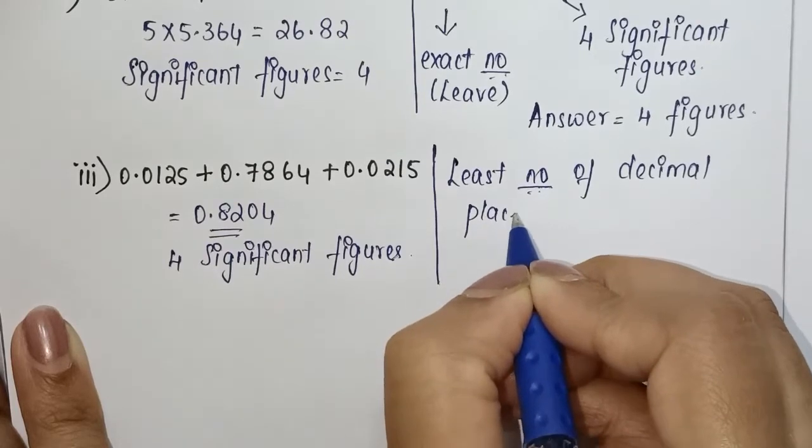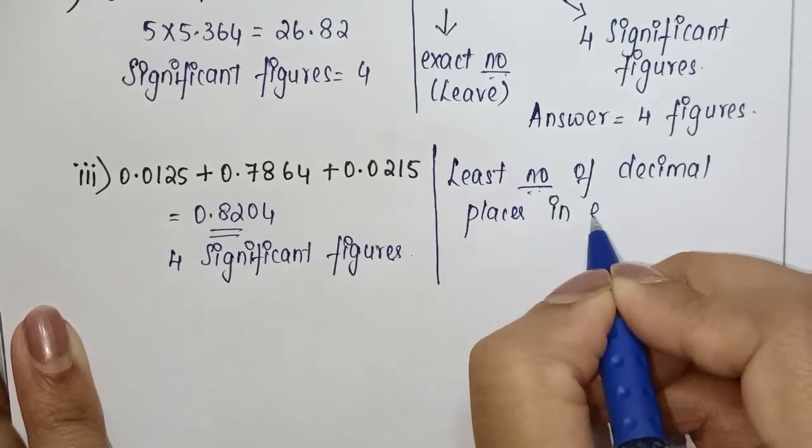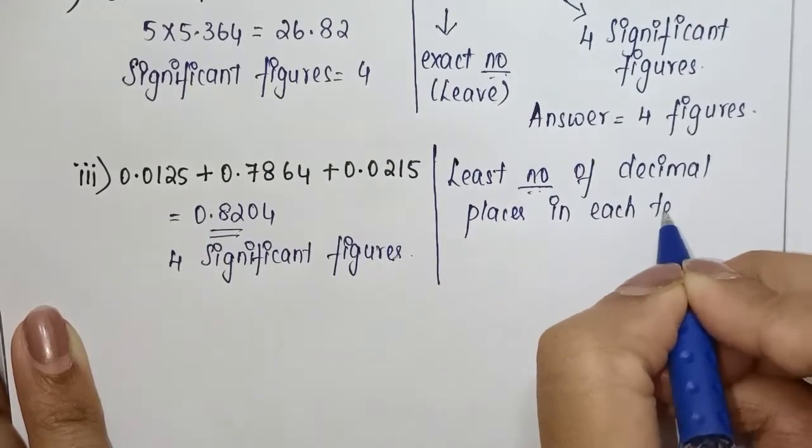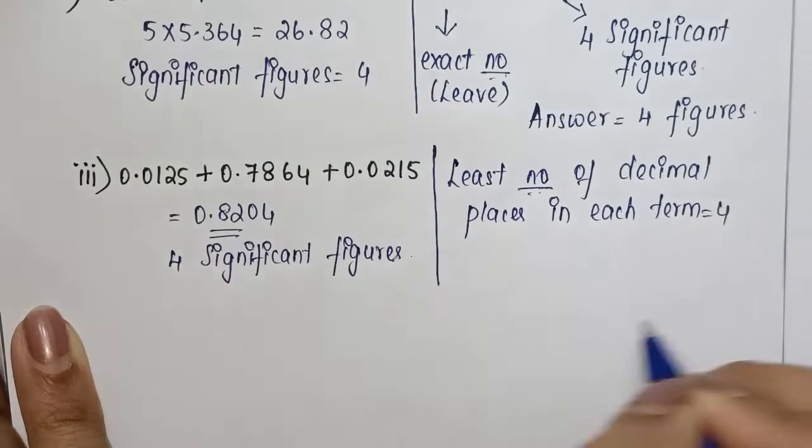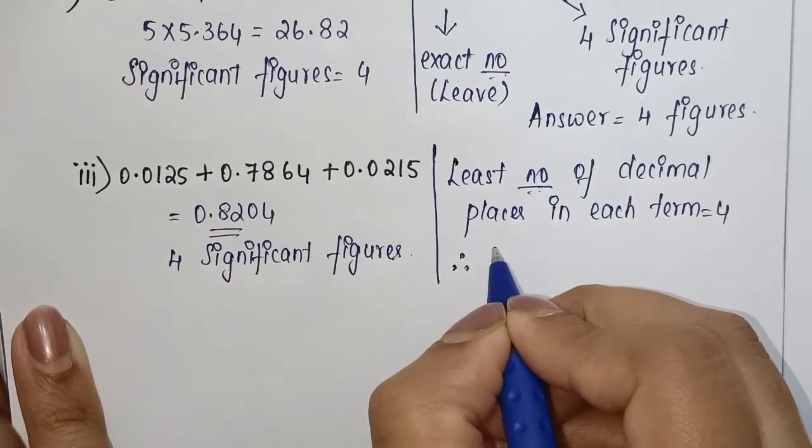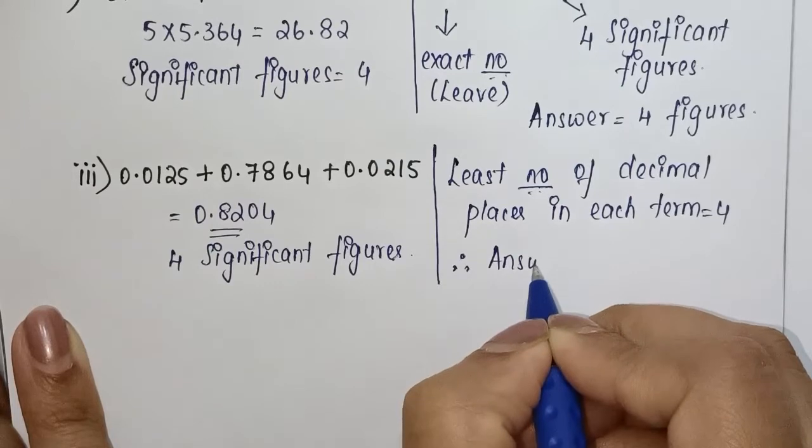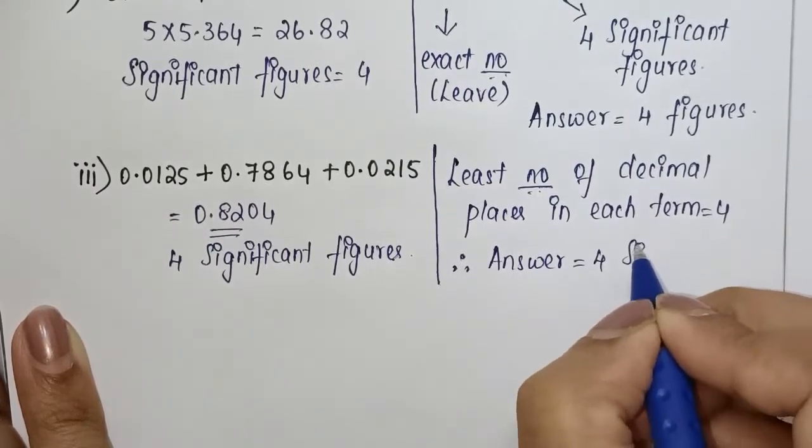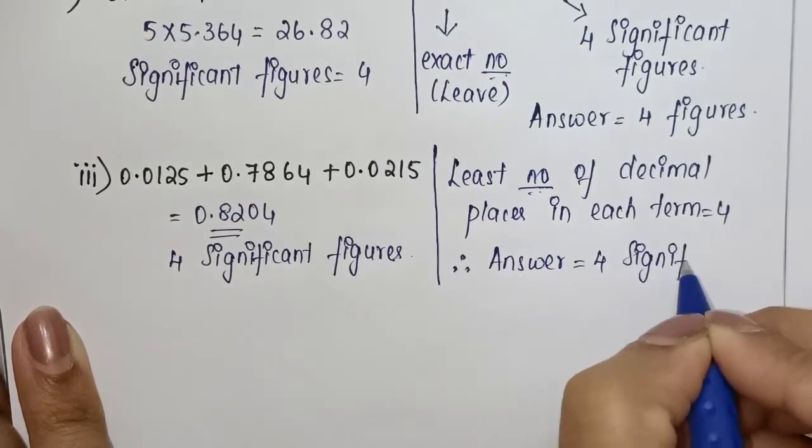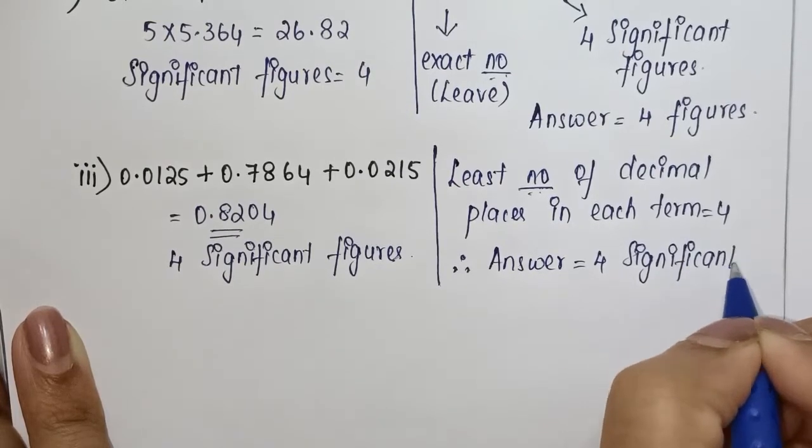The least number of decimal places in each term is four. Therefore, the answer will have four significant figures.